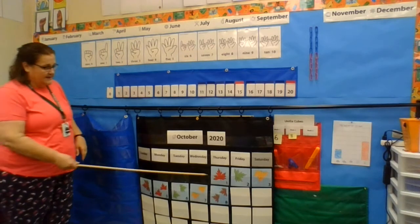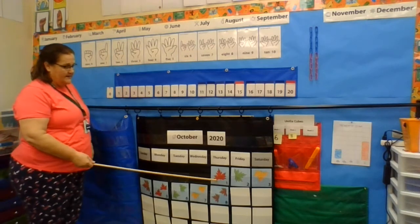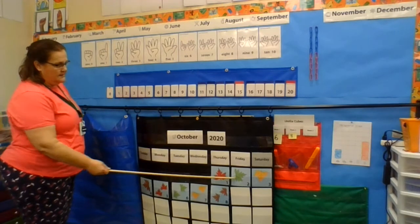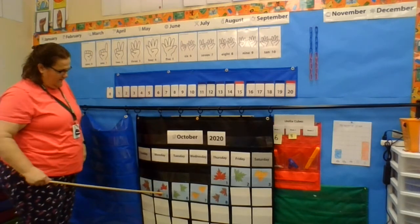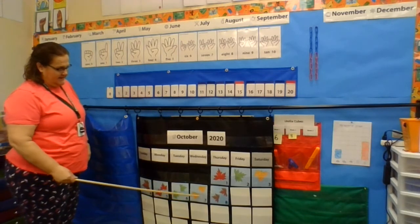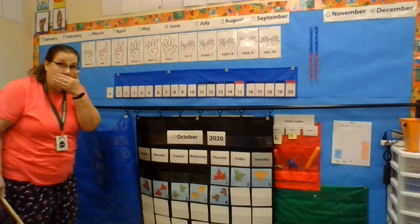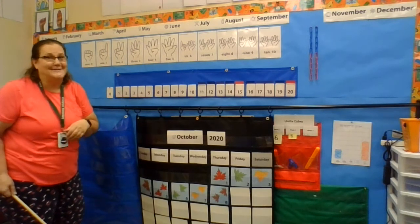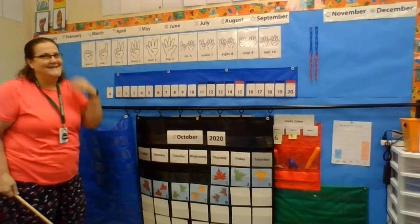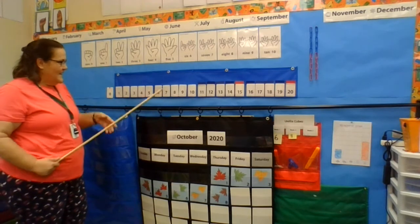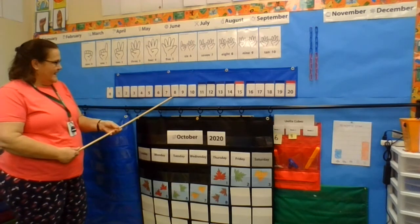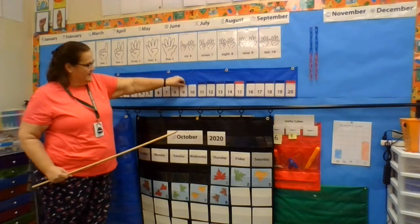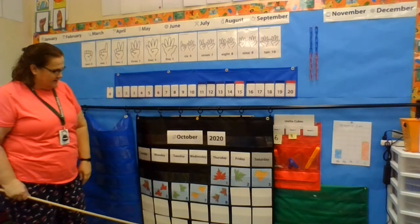Let's count and see what day of October it is. Ready? One, two, three, four, five, six, seven, eight. What's the number, everyone? Did you say nine? Good counting, because after eight comes nine. This is a really handy tool to help us know what comes next.